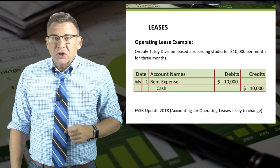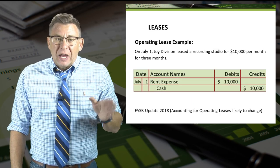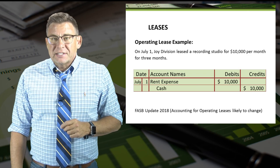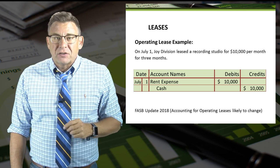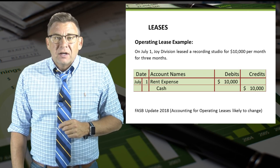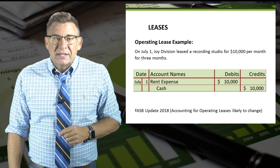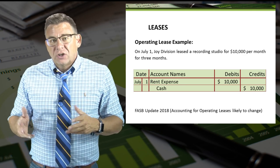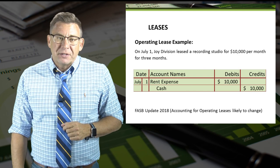Let's look at an example and record a journal entry. On July 1, Joy Division leases a recording studio for $10,000 per month for three months. The journal entry includes a debit to rent expense and a credit to cash for the first month's lease payment.